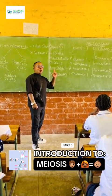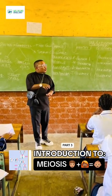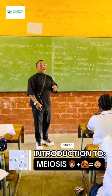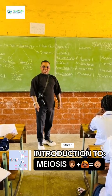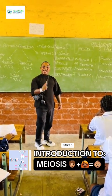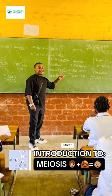That anaphase means away or apart — the chromosomes or chromatids are moving away and apart from each other. Do you understand? They are moving towards opposite poles.